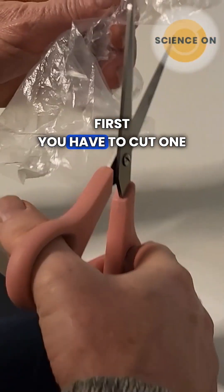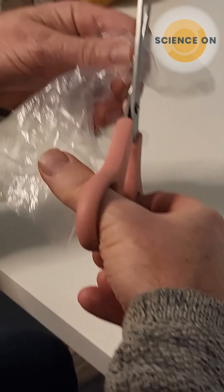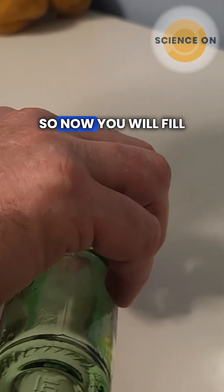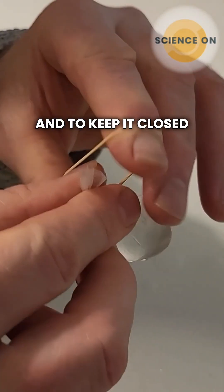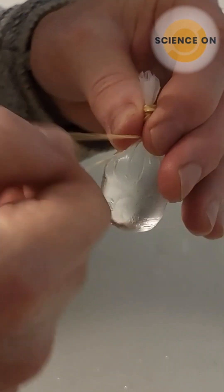First, you have to cut one of the fingers from the hand glove. Then you will fill the finger with vinegar, and to keep it closed we'll use an elastic.